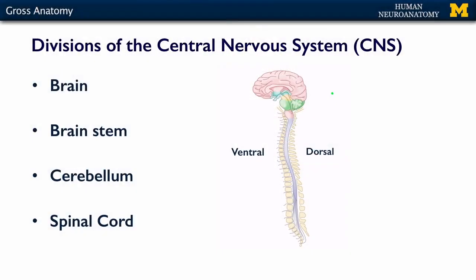Today we're going to talk about the gross anatomy of the nervous system, specifically the central nervous system. Gross anatomy refers to the things you can see with your naked eye. The central nervous system consists of the brain and the spinal cord.